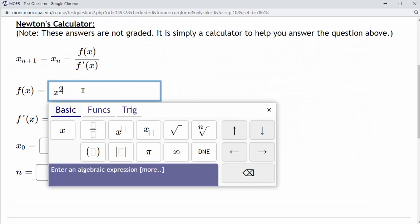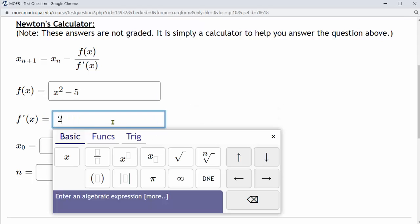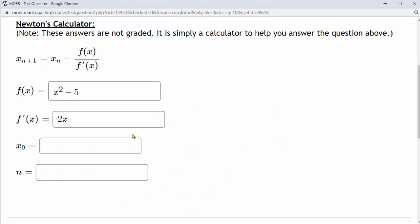First we enter the function x squared minus 5. Next we enter f prime of x which is 2x. Next we have x sub 0, our initial approximation which we selected as 2.1. And now n is going to be the number of iterations we run.